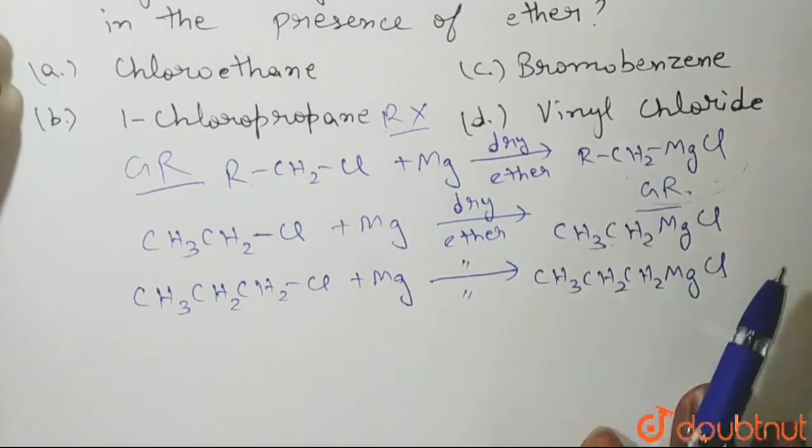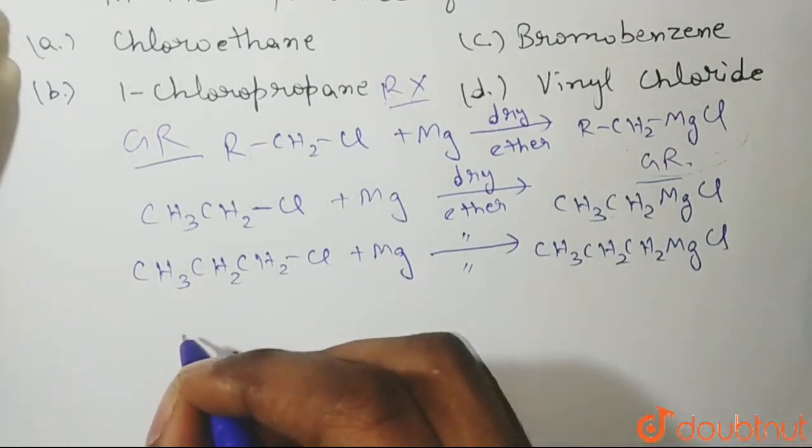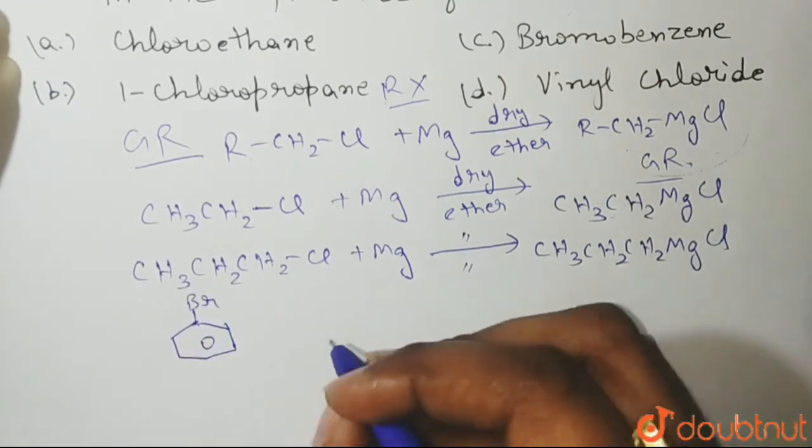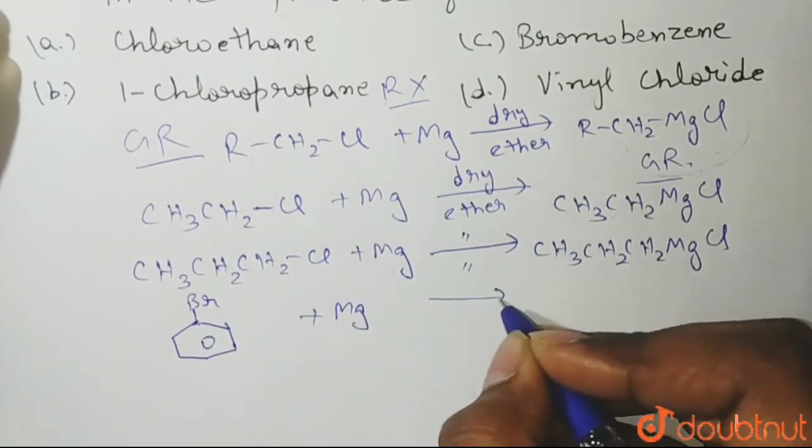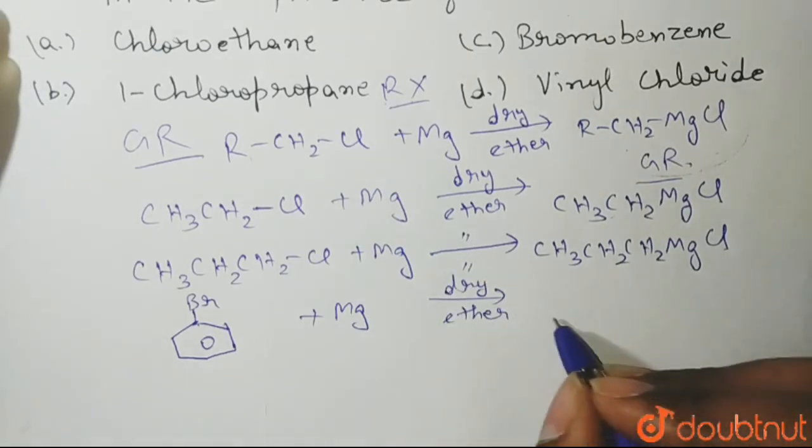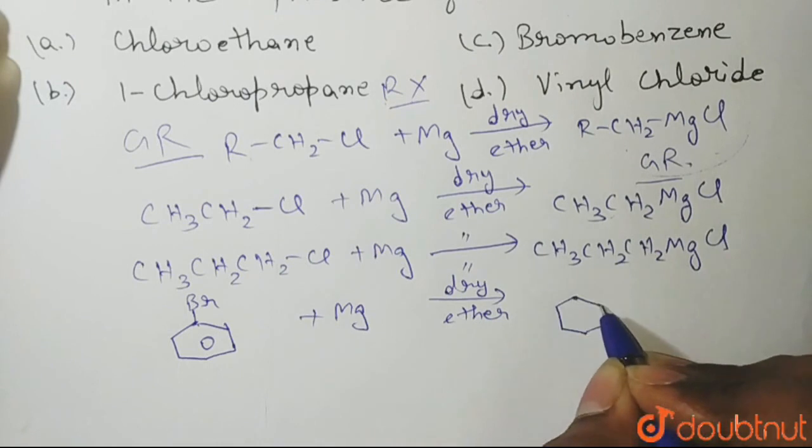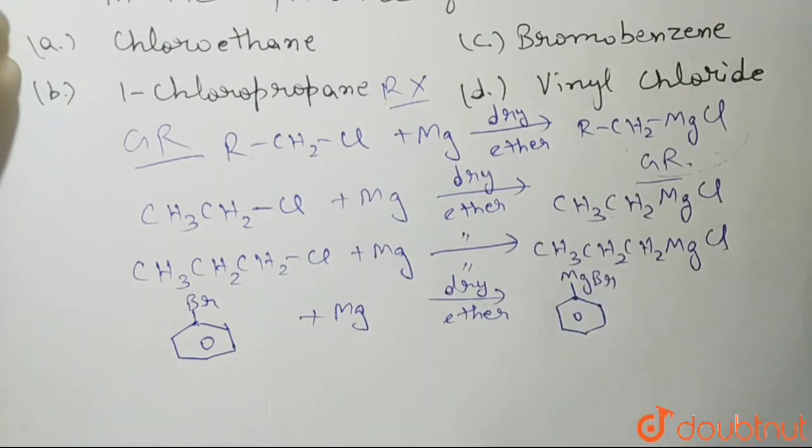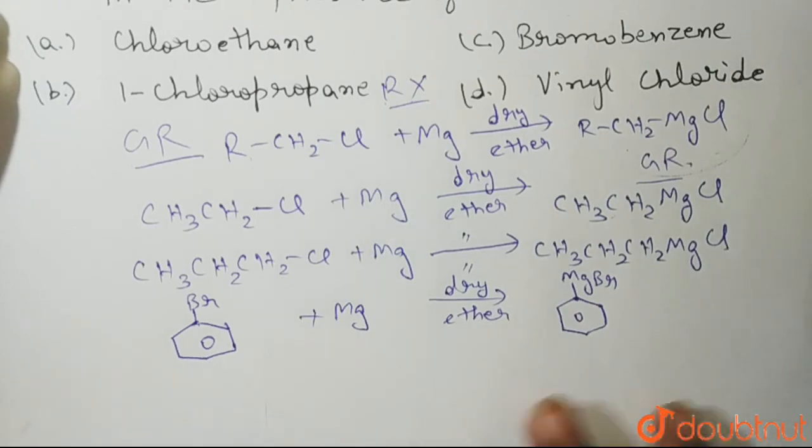Now if you treat it with bromobenzene, as I said, it could be aryl halide as well. This is our bromobenzene. When you treat it with magnesium in presence of dry ether, what you will get? You will get this Grignard reagent with MgBr. So this is the Grignard reagent that is forming here.